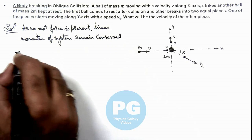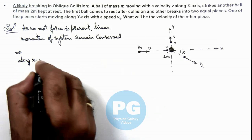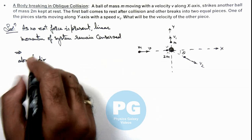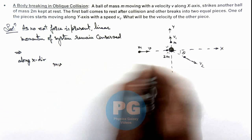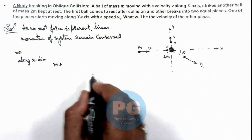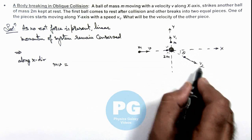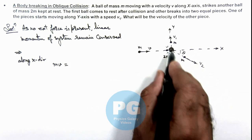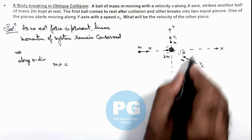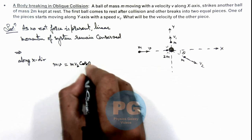This implies here we can write, along x direction, the initial momentum was mv for the ball which is approaching to mass 2m. And after collision, it'll be only due to the horizontal component of the particle or the part of this body of mass m moving at v2. So it can be written as mv2 cos theta, say this is our first equation.